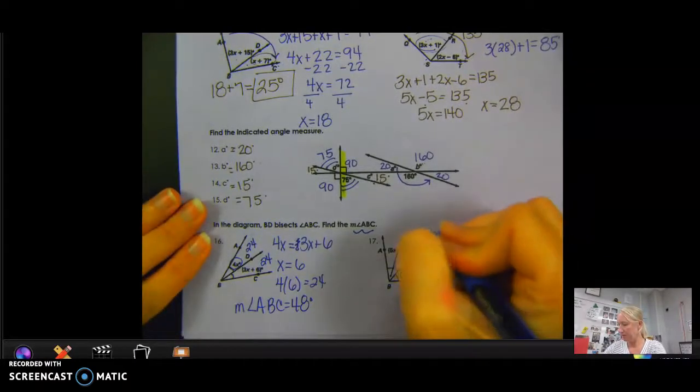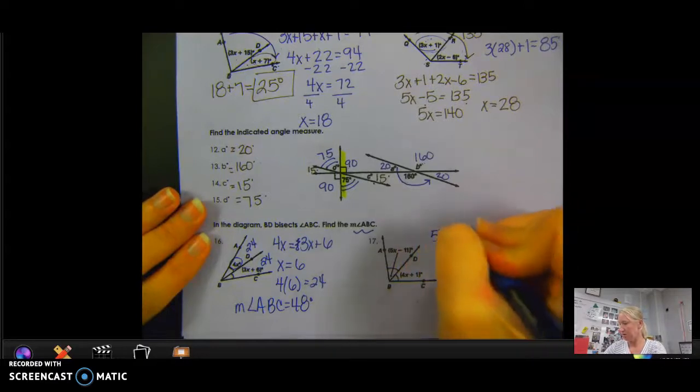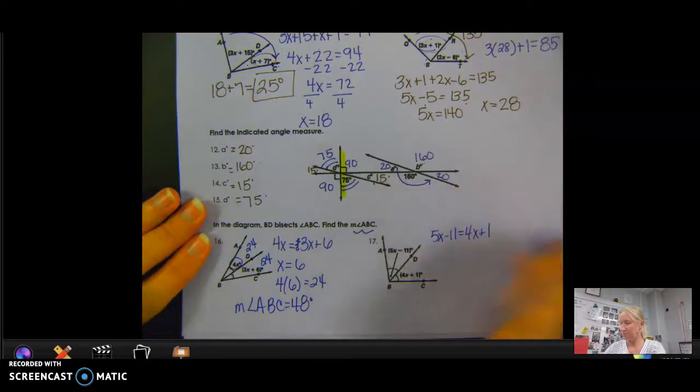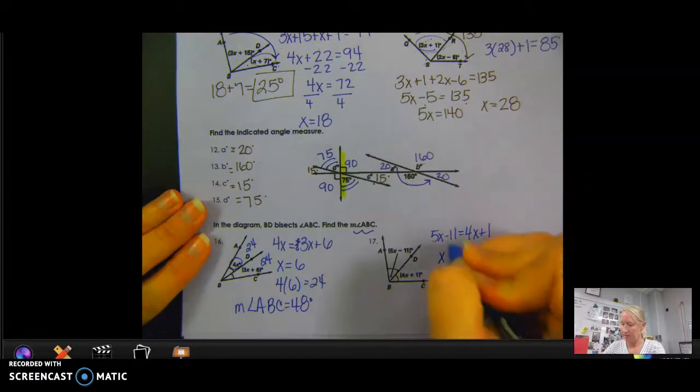So the measurement of angle ABC equals 48 degrees. Similar process over here. 5x minus 11 equals 4x plus 1. I'm going to subtract 4x and get 1x.